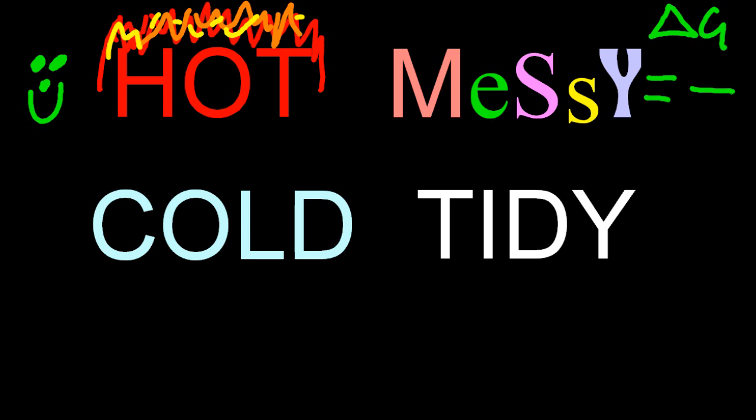So, to recap, hot and messy always happens. I know this sounds weird, but if I remember it like this, I find the delta G equation easier to understand. Hot and messy always happens. Delta G is negative, spontaneous.